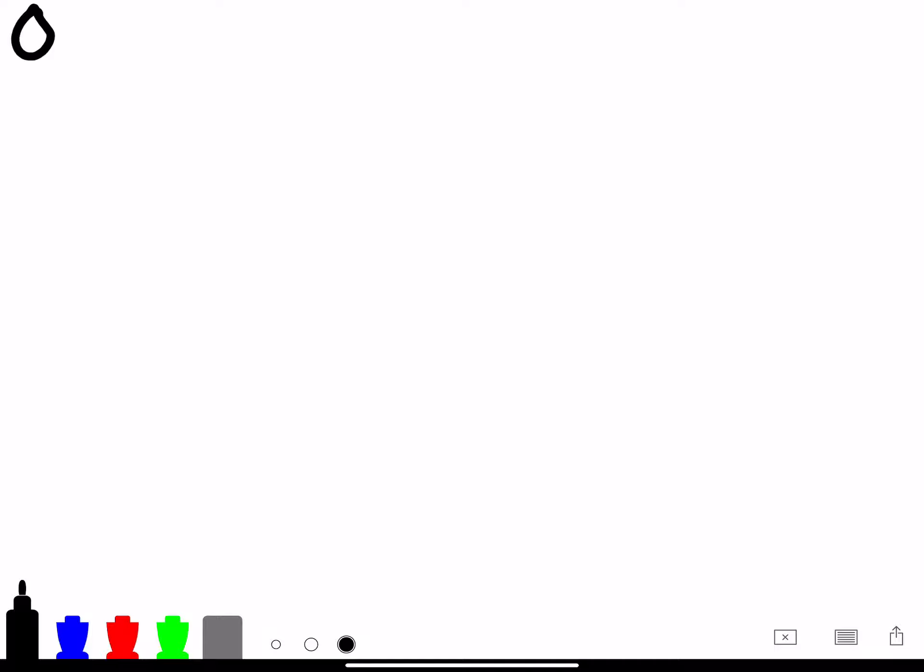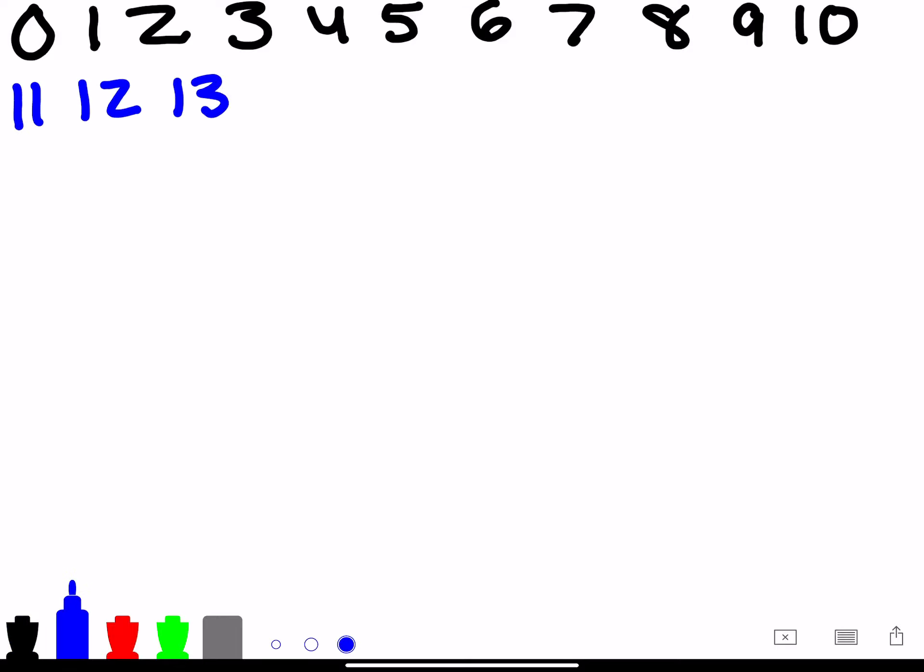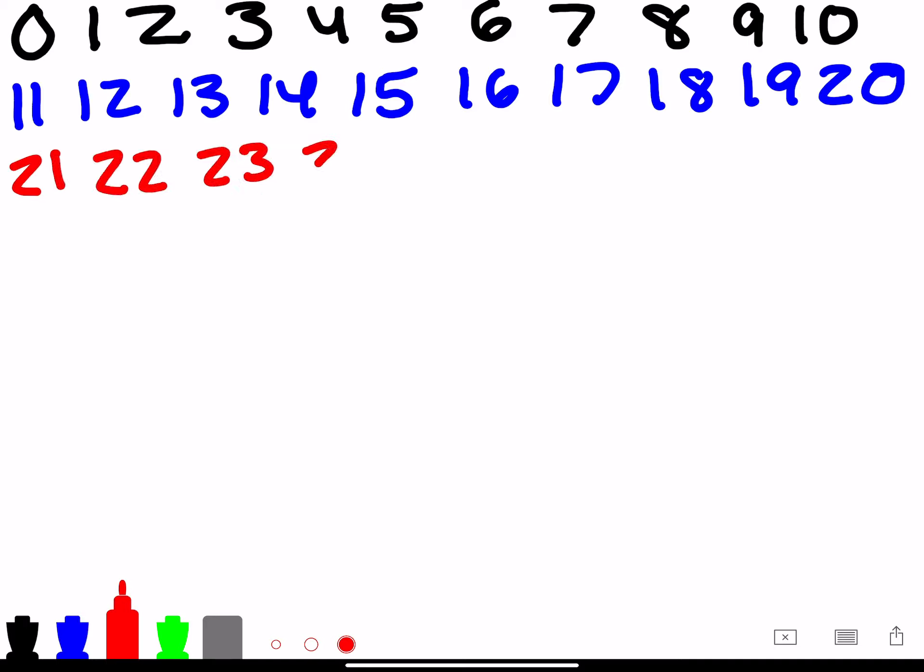Let's count from 0 to 30: 0, 1, 2, 3, 4, 5, 6, 7, 8, 9, 10, 11, 12, 13, 14, 15, 16, 17, 18, 19, 20, 21, 22, 23, 24, 25, 26, 27, 28, 29, 30.